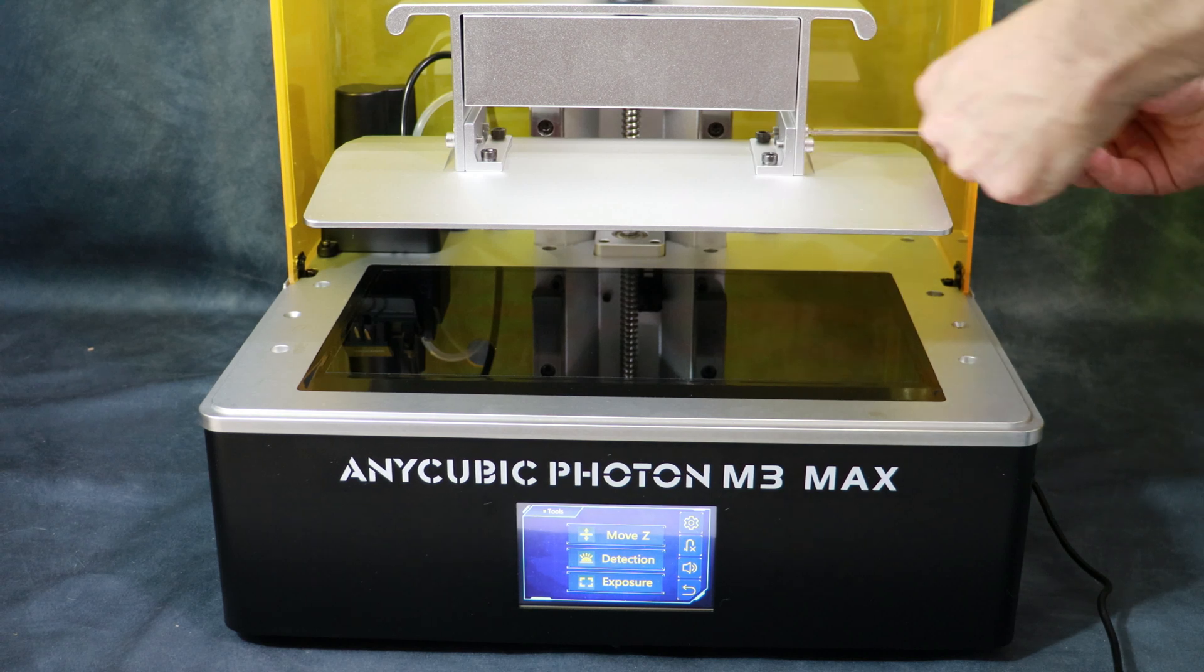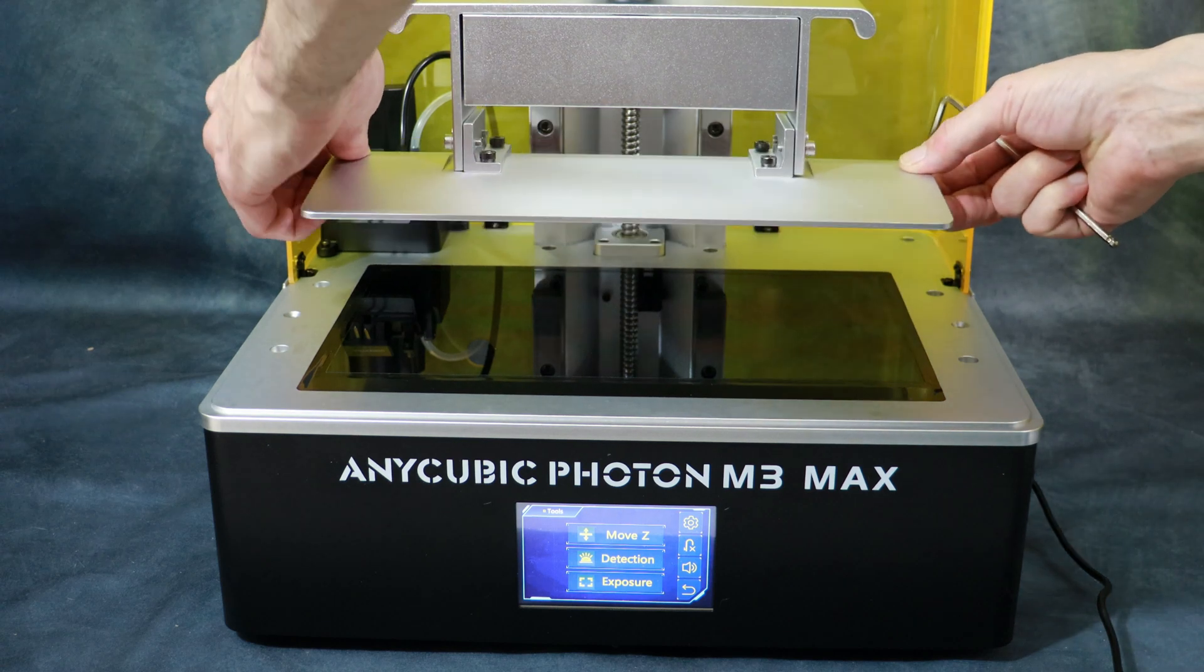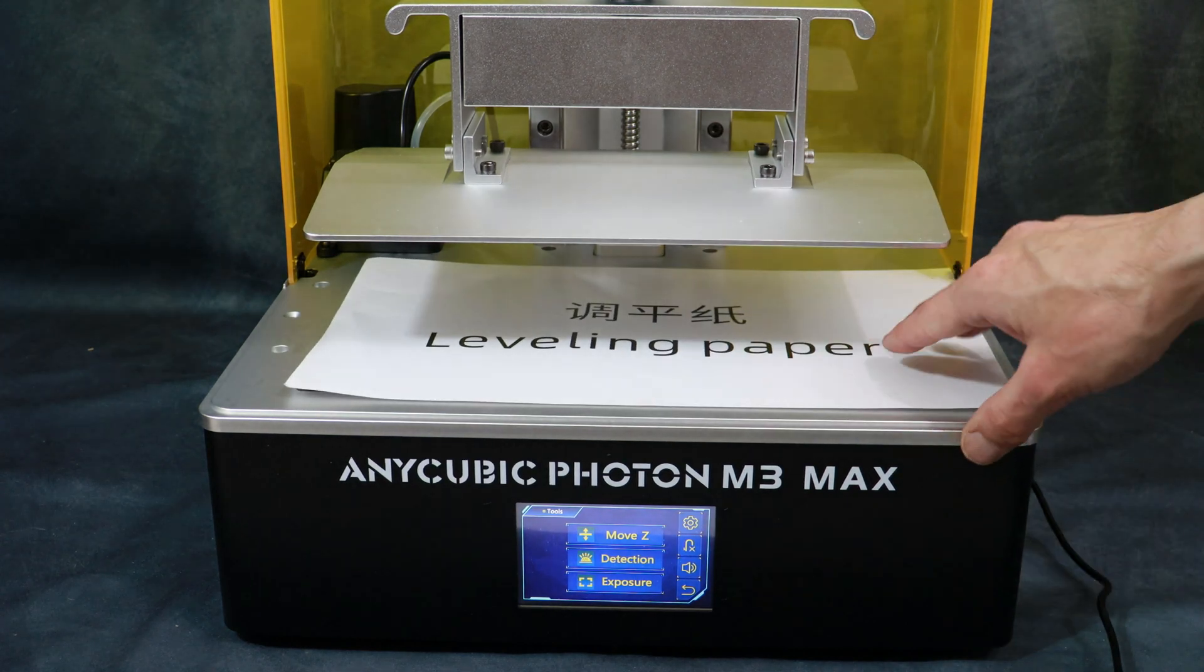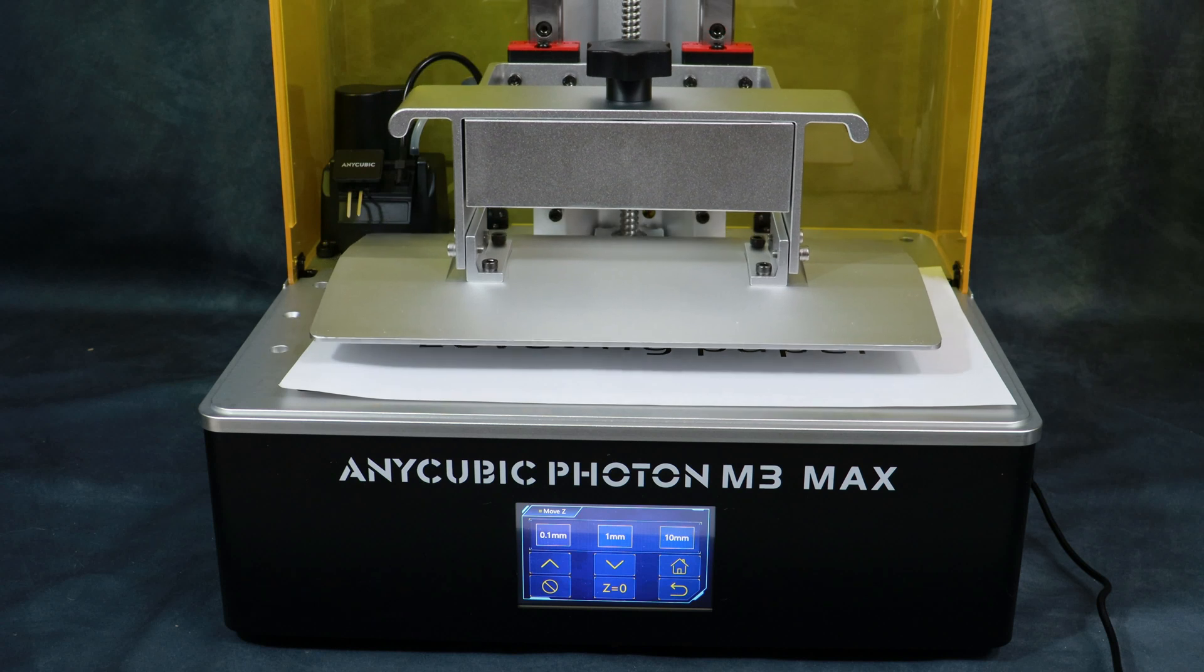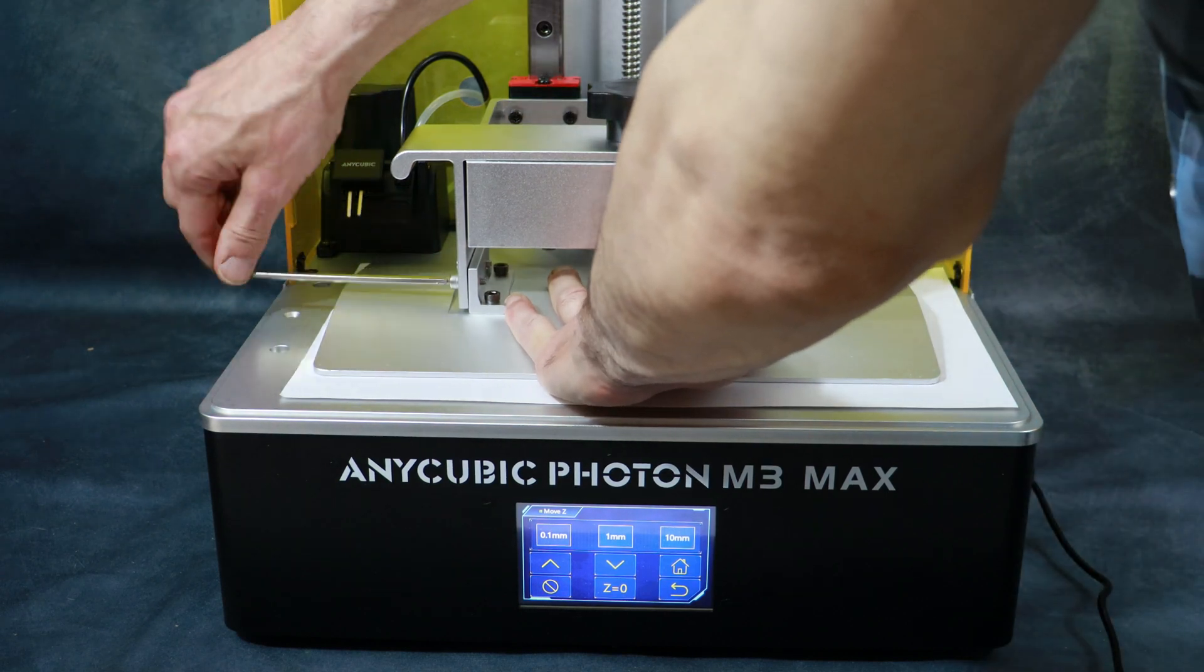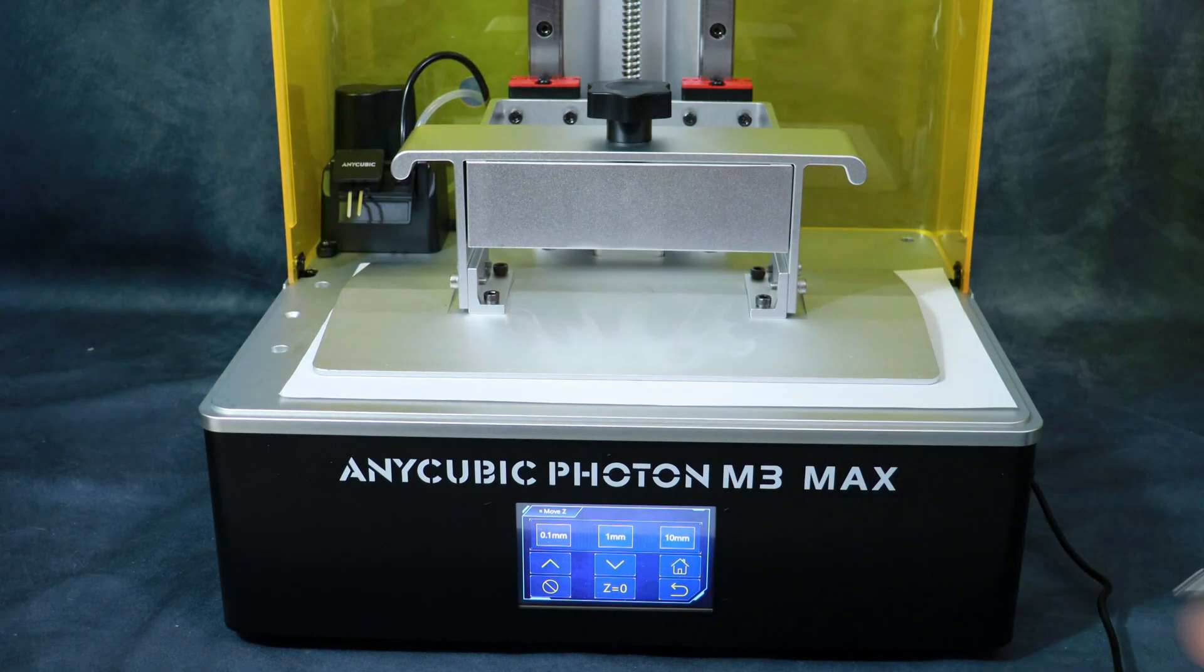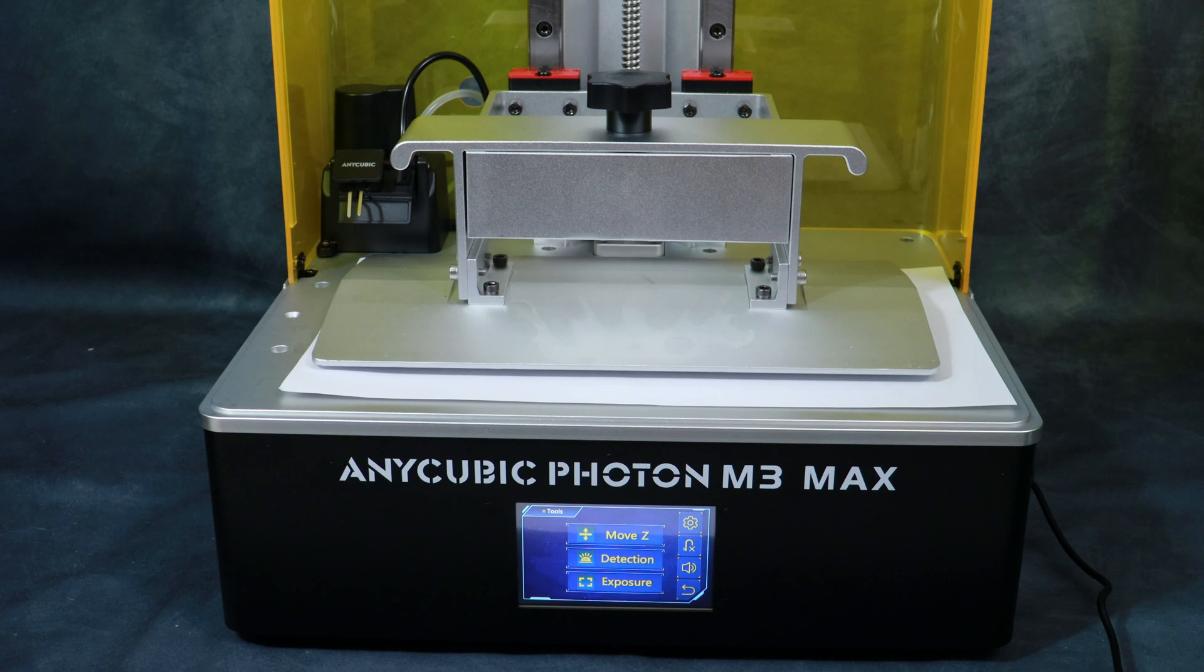Next thing we're going to do is loosen all the four screws on the build platform so it can move freely. Then we can level the platform using the piece of paper supplied in the box. Now go into the move Z menu and hit the home button. The bed will lower it into the home position. Once it has settled apply a little bit of pressure and tighten the four screws. Once you have completed that we're going to hit the Z equals zero button. Hit enter and enter again. The build platform will rise up a little bit.